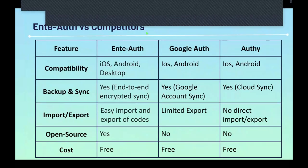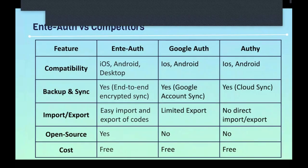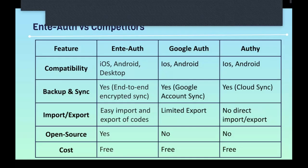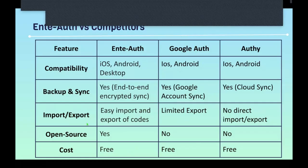Comparing compatibility: Ente Auth can be accessed on iOS, Android, and desktop; Google Authenticator on iOS and Android; and Authy also on iOS and Android. For backup and sync: Ente Auth provides end-to-end encrypted sync; Google Authenticator provides Google account sync; and Authy provides cloud sync. For import/export: Ente Auth can easily import and export codes; Google Authenticator has limited export; and Authy has no direct import/export. Open source: Ente Auth — yes; Google Authenticator — no; Authy — no. Cost: all are free.